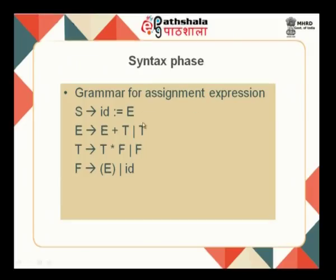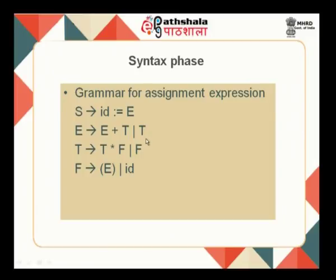'Initial' is a lexeme mapped to the token (id, 2), where 2 points to the symbol table entry for initial. 'Plus' is mapped to the token 'plus'. 'Rate' is mapped to (id, 3). 'Star' and '60' are also tokenized. The context-free grammar for an assignment expression is: statement → id := e; expression e → e + t | t; t → t * f | f; f → (e) | id. This is a sub-grammar for assignment expressions.